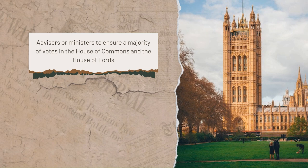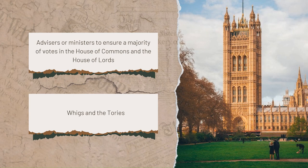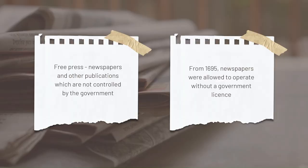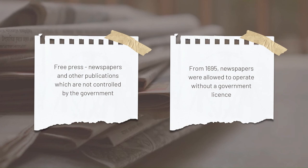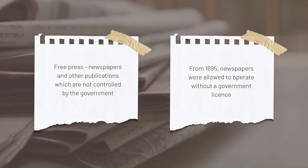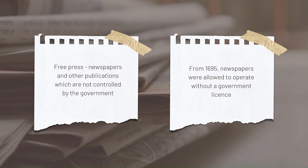There were two main groups in Parliament, known as the Whigs and the Tories. The modern Conservative Party is still sometimes referred to as the Tories. This was the beginning of party politics. This was also an important time for the development of a free press — newspapers and other publications which are not controlled by the government. From 1695, newspapers were allowed to operate without a government license, and increasing numbers of newspapers began to be published.